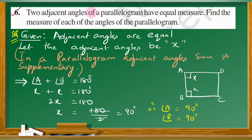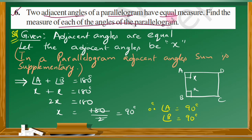Question number 6: Two adjacent angles of a parallelogram have equal measure. Find the measure of each of the angles of the parallelogram. So here in a parallelogram, two adjacent angles are equal.